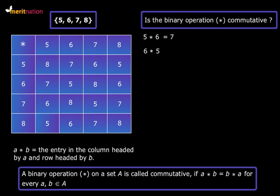And what about 6 star 5? Look at the table, 6 here, 5 here, this element. So we see that 6 star 5 is also 7. And this tells us that 5 star 6 equals 6 star 5.